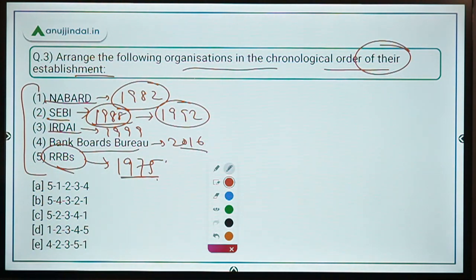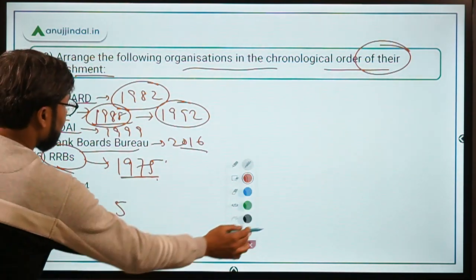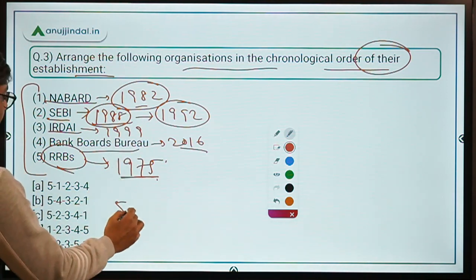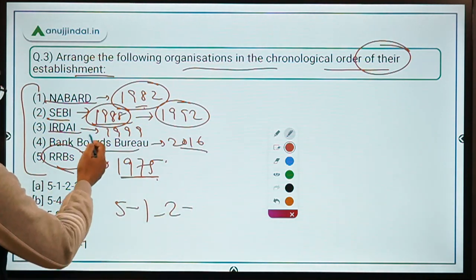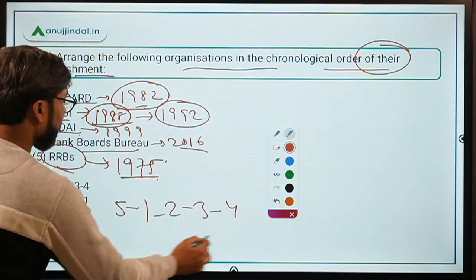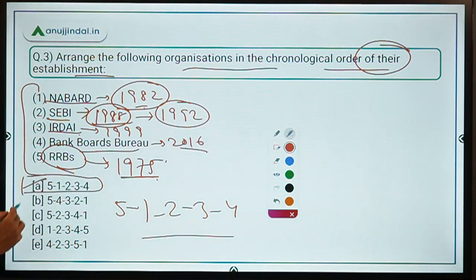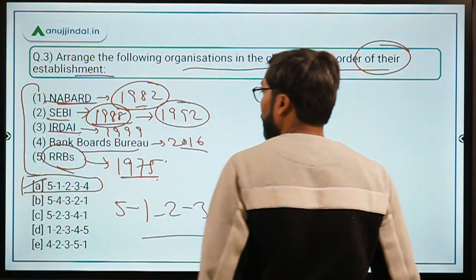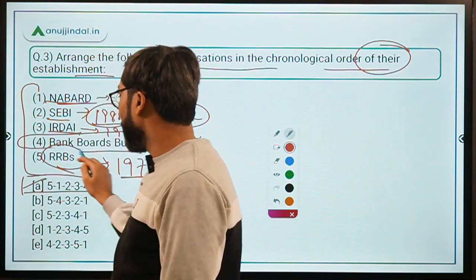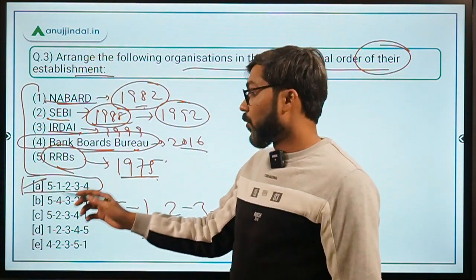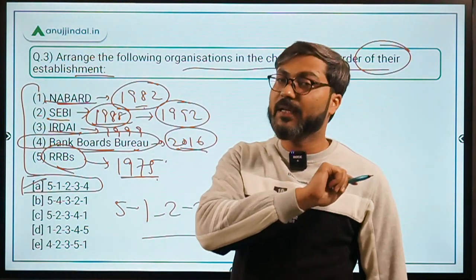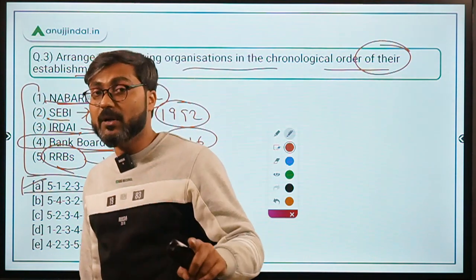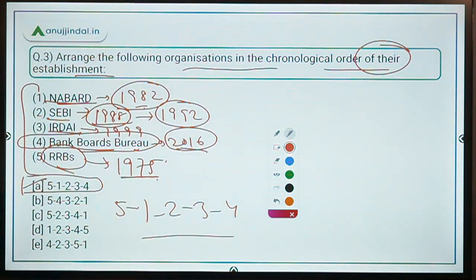So the chronological order is: RRBs (1975) first, then NABARD (1982), then SEBI (1992), then IRDAI (1999), then Bank Boards Bureau (2016) — giving the order 5-1-2-3-4, which means option A is the correct answer. Current chairpersons: NABARD — Govinda Rajulu Chintala; SEBI — Ajay Tyagi; IRDAI — Subhash Chandra Khuntia. Write in the comments the name of the chairperson of Bank Boards Bureau. Note that RRBs cannot have one chairperson.